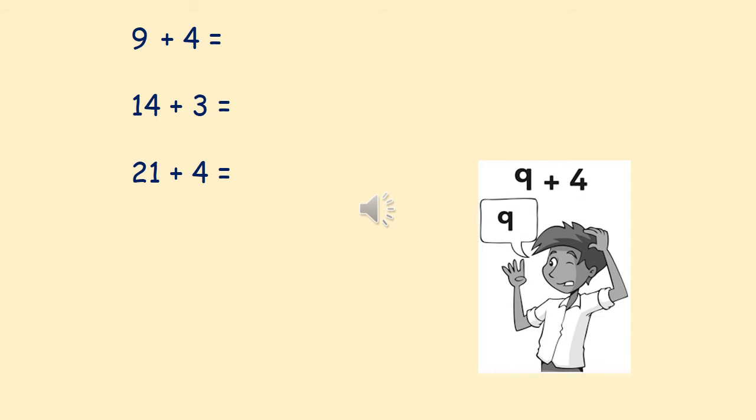I've got some number sentences: 9 plus 4, 14 plus 3, 21 plus 4. When we add two numbers together we can put the larger one first and count on the smaller number, just like we did before. That means we've got less counting on to do.